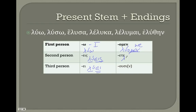'-ete' tells us that it is second person plural — 'you all'. And 'luousin' tells us that it is 'they are freeing'. The stem is 'lu' plus '-ousin'.